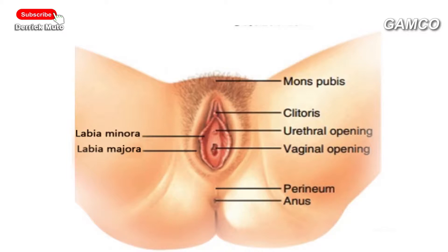Number seven: labia minora. It is an inner fold of skin. It protects the opening of the urethra and the vagina. These skin folds, when elongated, are perceived to facilitate orgasm and female ejaculation.